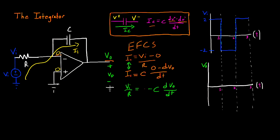Now in order to solve for VO, I'm going to integrate both sides of this equation. So this will give me the integral of VI divided by R is equal to negative C VO.